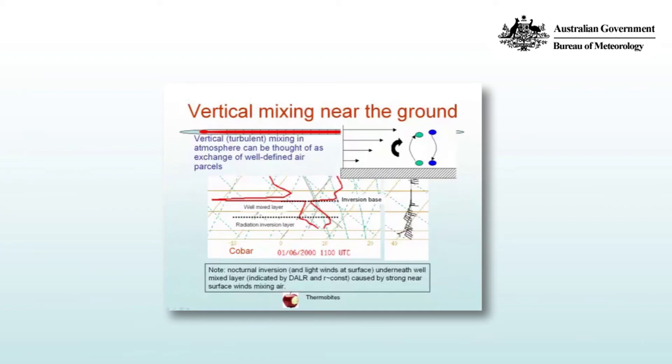At the top of the layer we have an inversion which is most probably a subsidence inversion and at the bottom of the layer we have what's likely a radiation inversion. Remember this is an evening radiosonde and so surface cooling means that there is an inhibition of vertical mixing so the temperatures decrease via longwave cooling and the moisture doesn't get mixed through the depth of the atmosphere so the surface dew point increases.